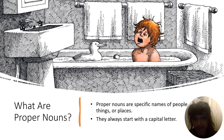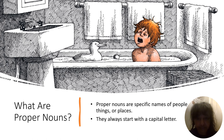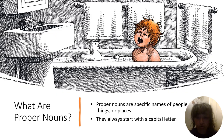Now let's talk about each one of the categories of nouns. What are proper nouns? Proper nouns are specific names of people, things, or places — and remember, they always start with a capital letter.